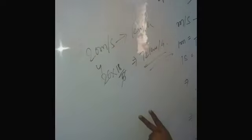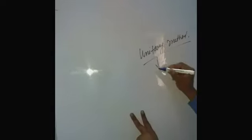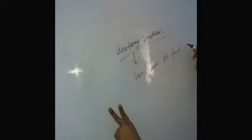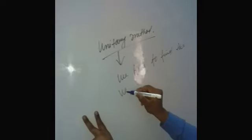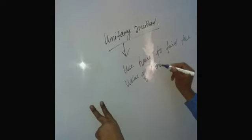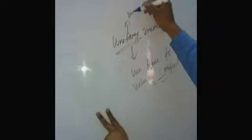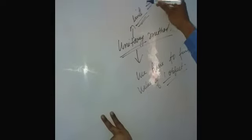The last topic of this chapter is the unitary method. Unitary method is a topic in which we find out the value of one substance, one thing, one object. In the unitary method, we find the value of one object. Unitary means unit, and unit means one.